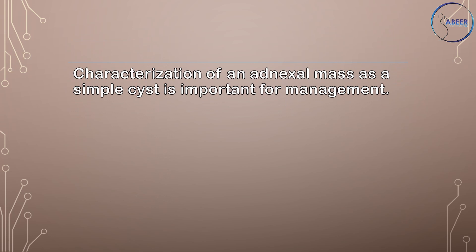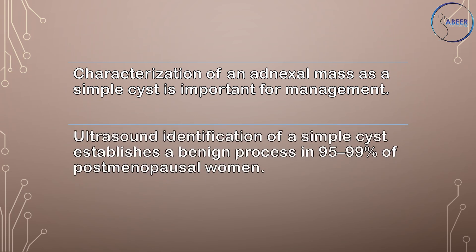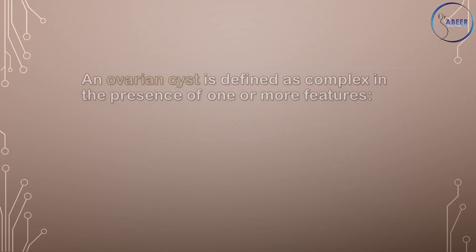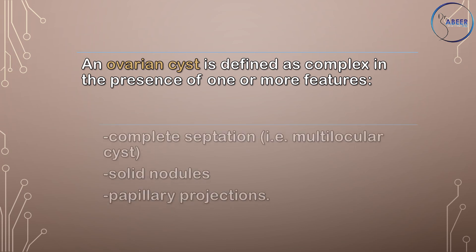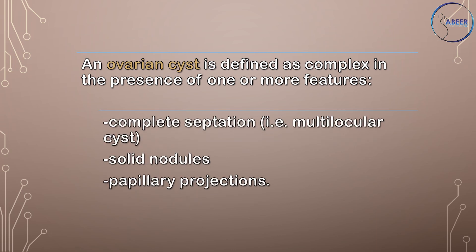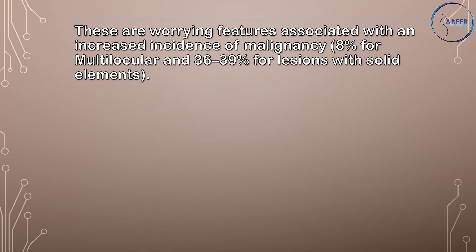Characterization of an adnexal mass as a simple cyst is important for management. Ultrasound identification of a simple cyst establishes a benign process in 95–99% of postmenopausal women. An ovarian cyst is defined as complex in the presence of one or more features: complete septation (e.g., multilocular cysts), solid nodules, and papillary projections. These are worrying features associated with an increased incidence of malignancy: 8% for multilocular, and 36–39% for lesions with solid elements.